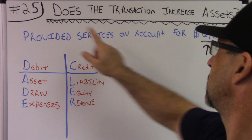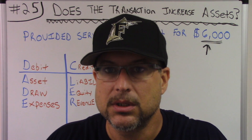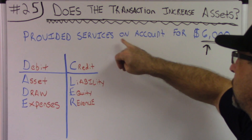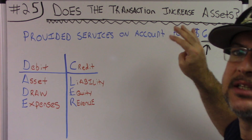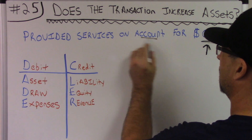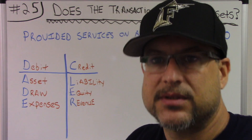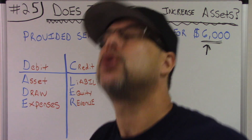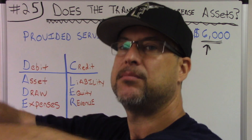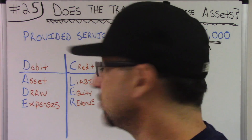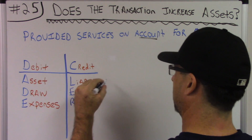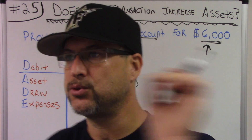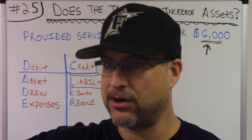Provided services on account for $6,000. We don't have cash — I'm looking for cash. It doesn't say cash, it says on account. So what the heck is on account? I've heard of accounts payable before — payables are liabilities. So an account payable is a liability. There's another account I've heard about: accounts receivable. That's when I do work for somebody and they say I'll pay you later, because there's an account and I get a receivable.